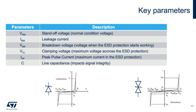VRM stands for maximum reverse voltage. It corresponds to the maximum voltage of the protected line under normal operating conditions. It is associated with IRM, the leakage current of the ESD protection. This current is very low so as not to impact the system consumption — it is typically measured below 100 nanoamps.